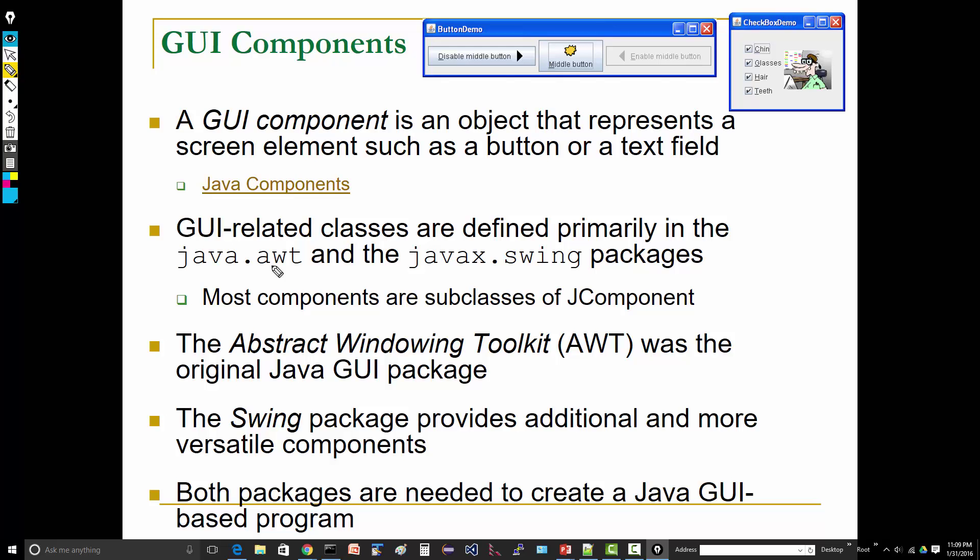It was the original... when the JDK was first developed back in the late 90s, the AWT was the Java GUI toolkit. The Swing package provides additional and more versatile components, so the Swing components are an improvement over the AWT components. Now you will see both packages in our Java GUI programs. We will use some classes out of the AWT, but just to be clear, our GUI components all come out of javax dot swing.